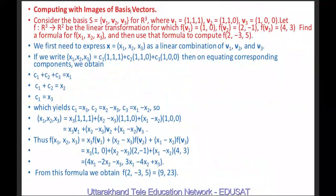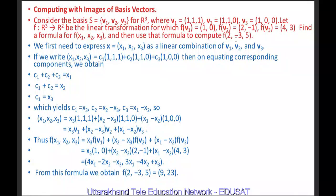Now, computing with images of basis vectors. Consider the basis S = {V1, V2, V3} for R³, where V1 = (1,1,1), V2 = (1,1,0), V3 = (1,0,0). Let F be a linear transformation from R³ to R² with F(V1) = (1,0), F(V2) = (2,−1), F(V3) = (4,3). Find a formula for F(x1, x2, x3) and use it to compute F(2, −3, 5).